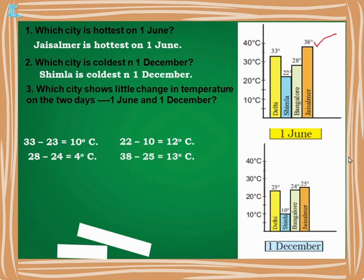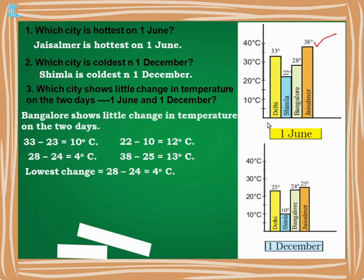Jaisalmer: 38 minus 25 = 13°C. Which city shows the least change? The least change is 4°C, and that is Bangalore. So the answer is: Bangalore shows the least change in temperature on the two days.